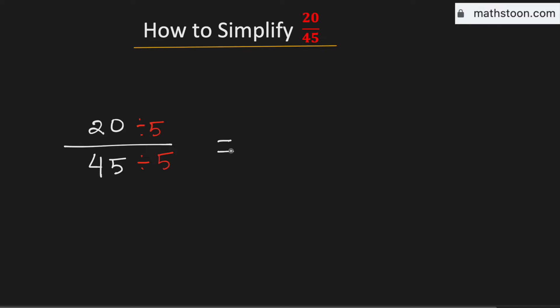And we get 4 in the numerator and 9 in the denominator. Now look that there is no number which can divide both 4 and 9 simultaneously other than 1.